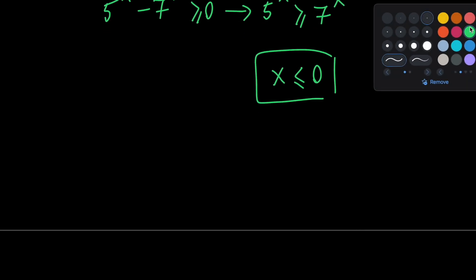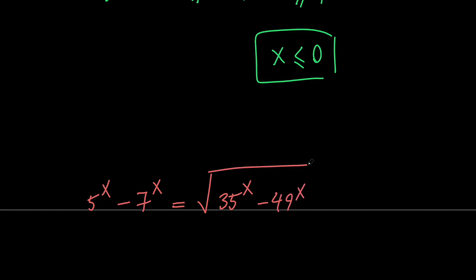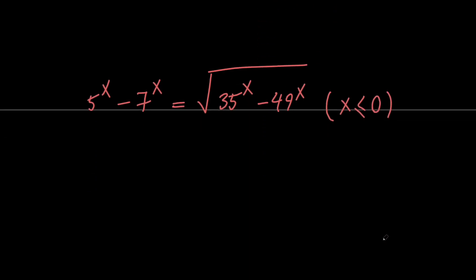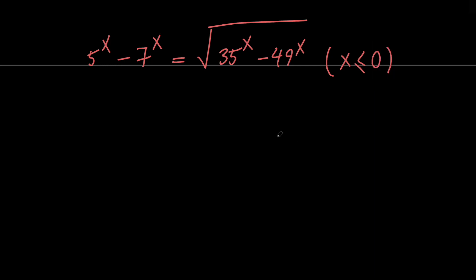Let me rewrite our problem. We have 5 to the x minus 7 to the x equals the square root of 35 to the x minus 49 to the x, and we know that x should be less than or equal to 0. In order to solve this, let's go ahead and square both sides to get rid of the radical.